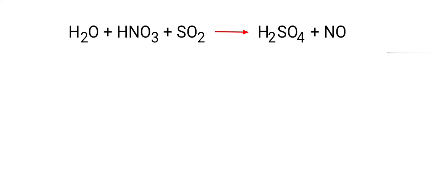First thing we do is give each compound a letter coefficient. A H2O plus B HNO3 plus C SO2 gives us D H2SO4 plus E NO.